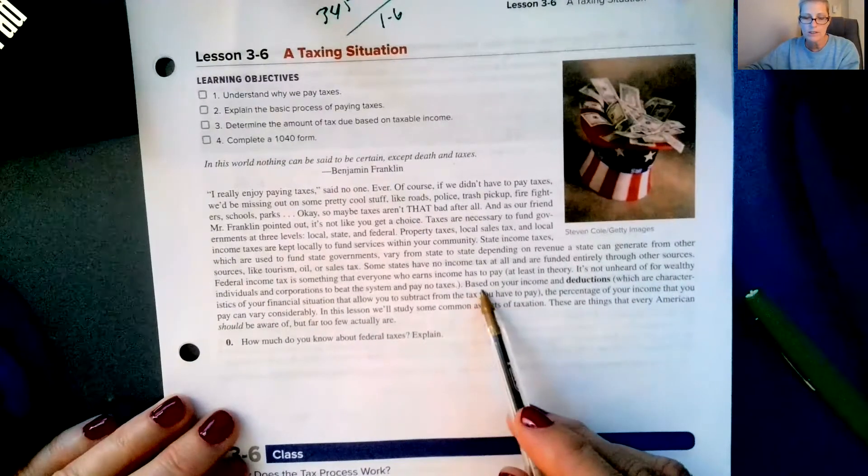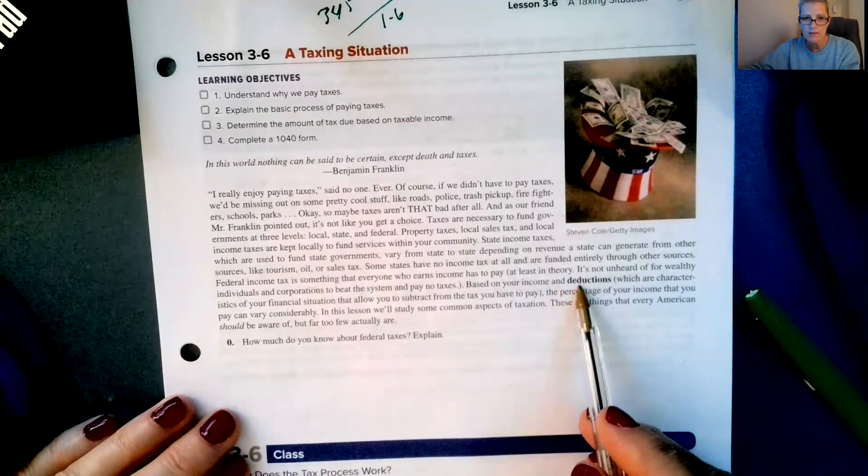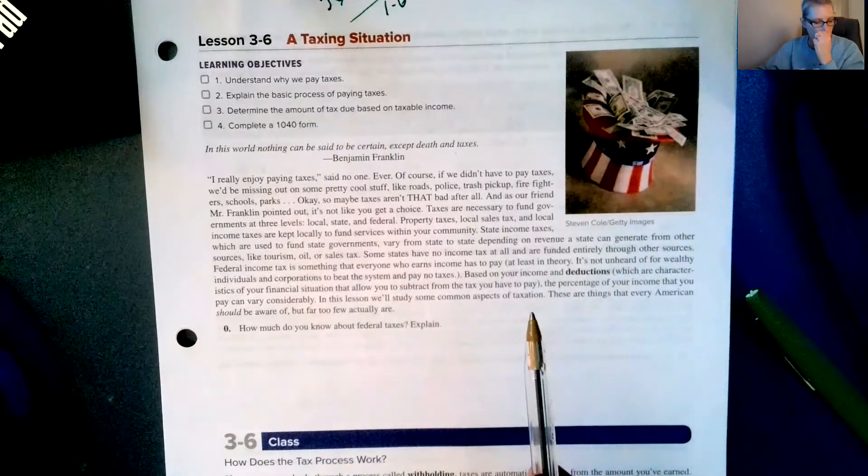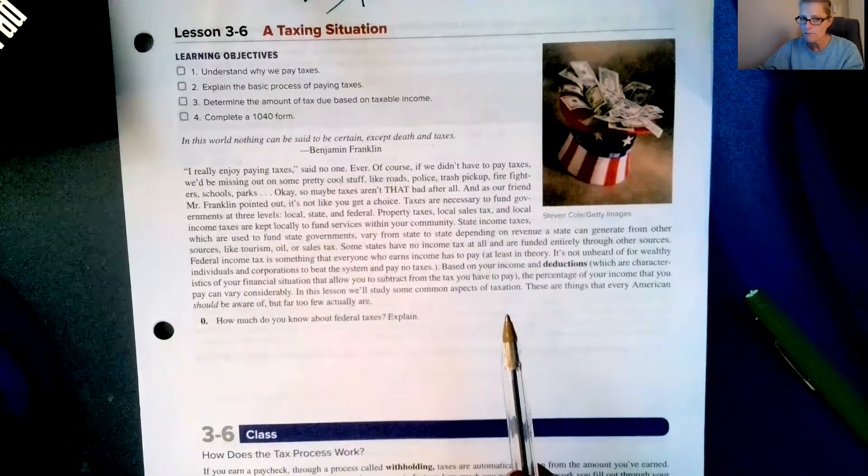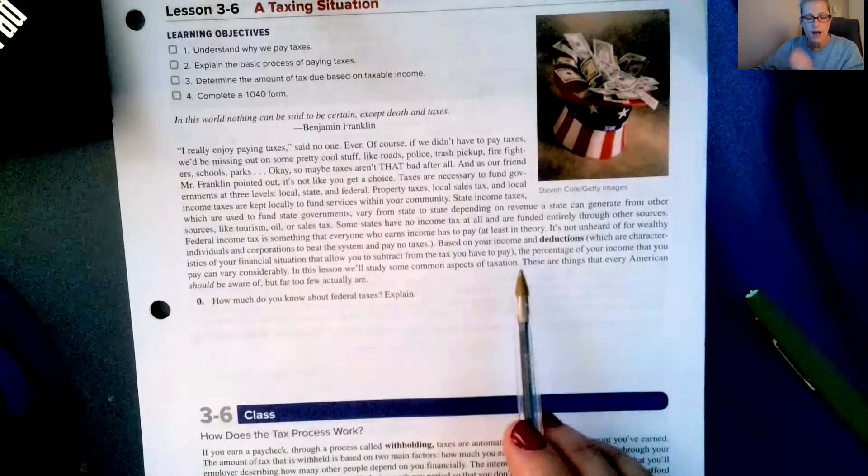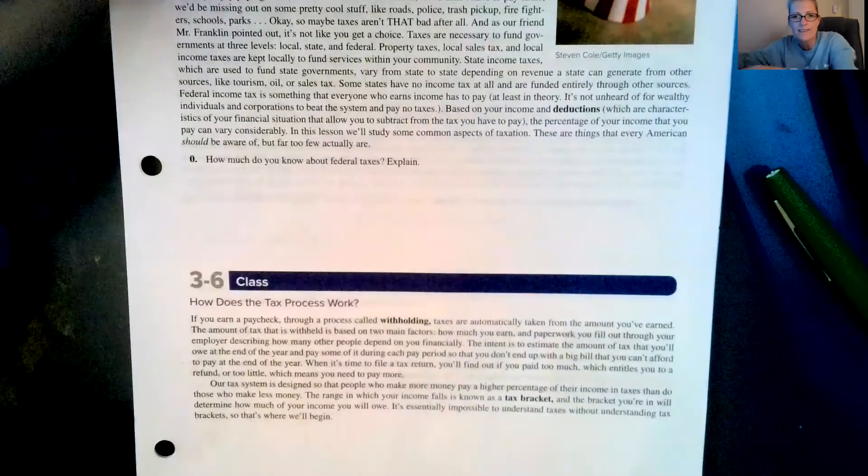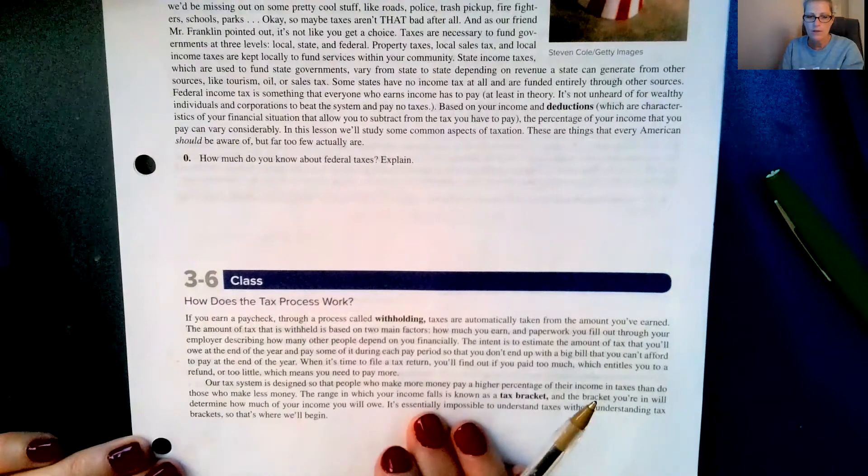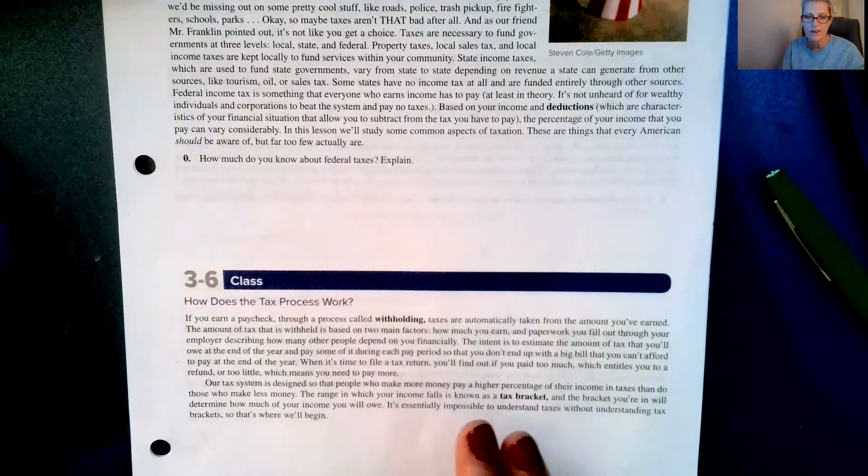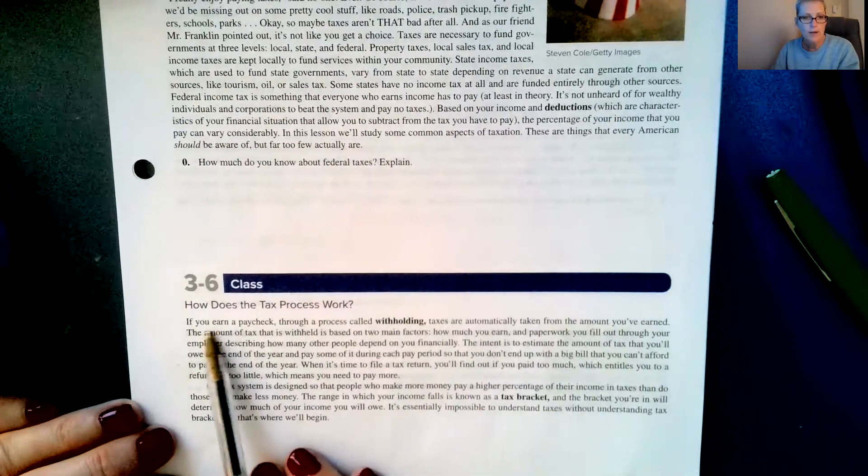Based on your income and deductions. When you go to get a job you fill out a form called an I9 to get your W2 at the end of the year, but your I9 form tells them how much money they should withhold from your taxes trying to estimate as accurate as possible.